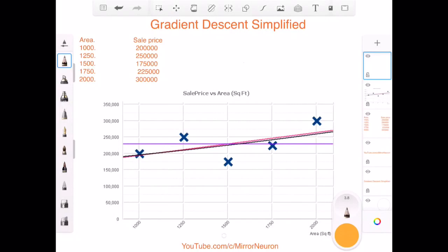Using that example, we will explain gradient descent. Our main intention is to be able to predict the sale price of a house which is as close as possible to the original value. In this graph, the x-axis represents area in square feet and the y-axis is the sale price.